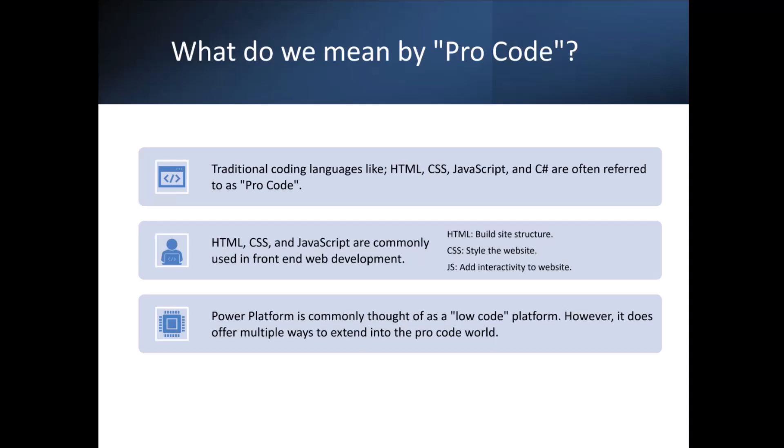HTML is typically used to build your site structure, CSS is used to style the website, and JavaScript is used to add interactivity. Now, Power Platform is commonly thought of as a low-code or no-code platform. However, it does offer a variety of ways to extend into the ProCode world.